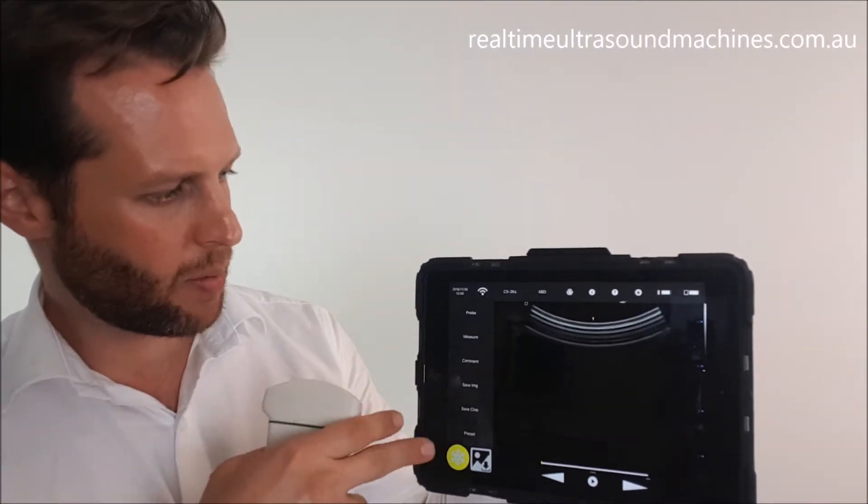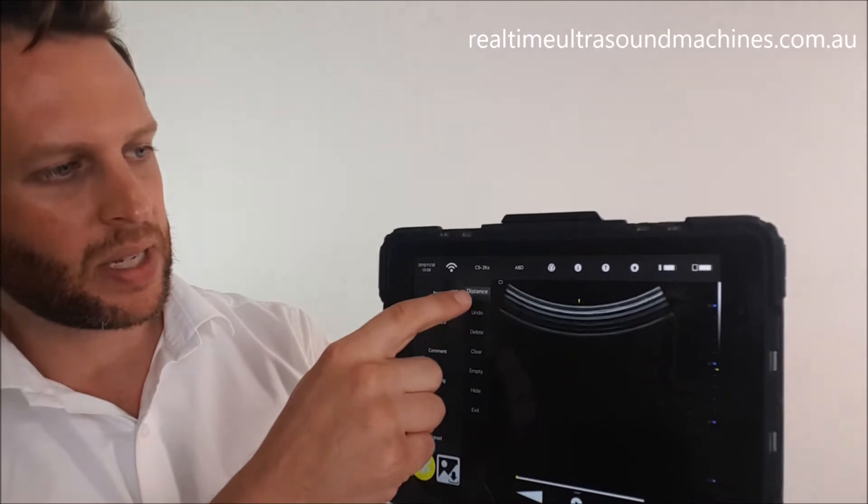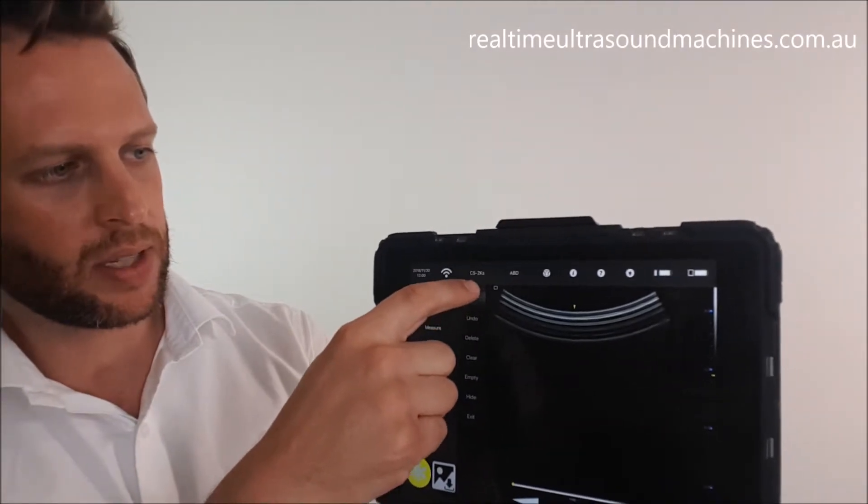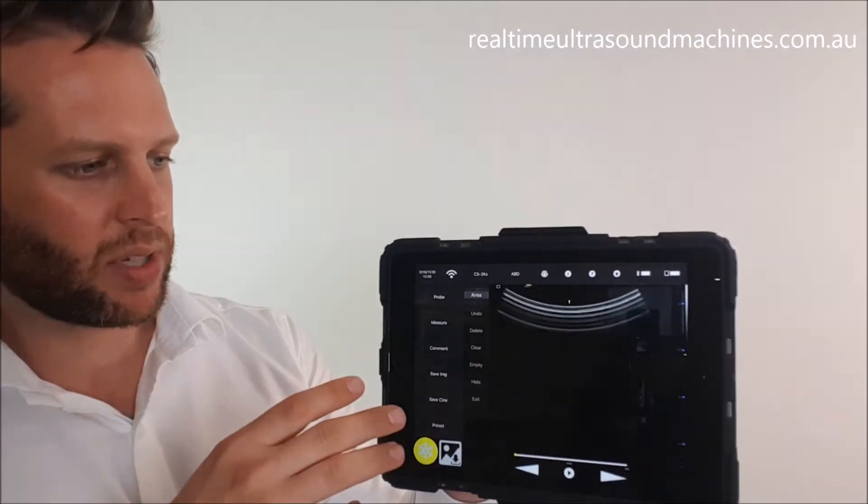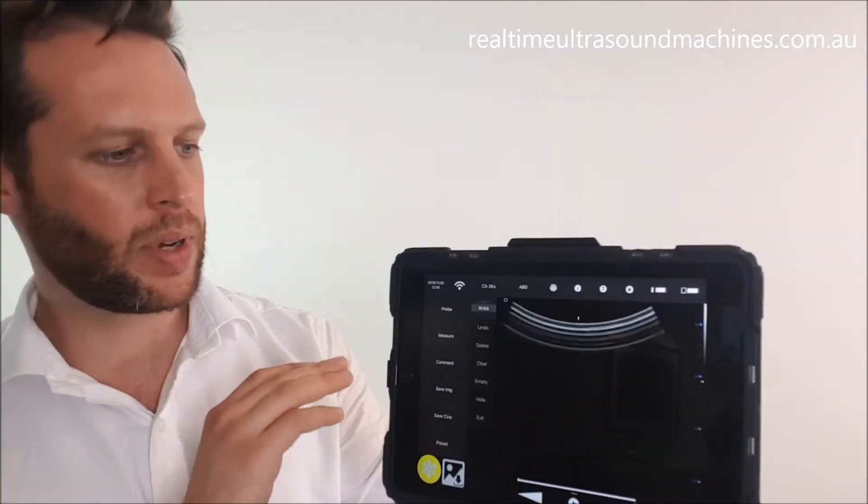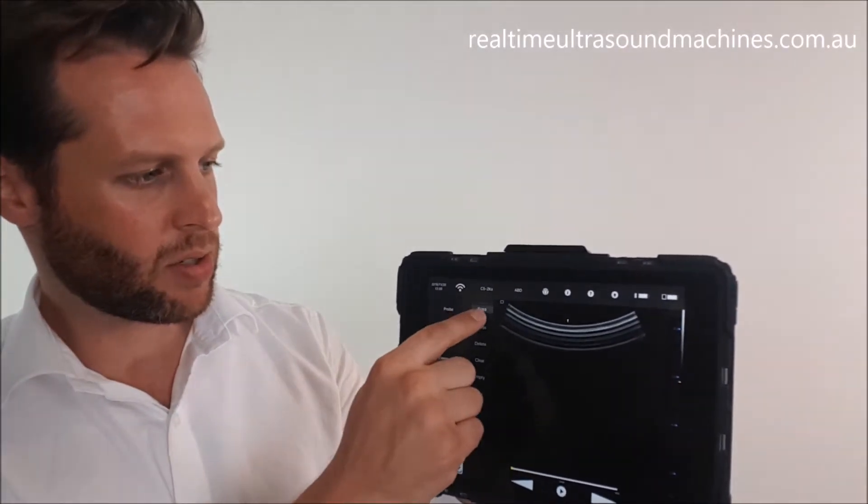Now if I want to do a measurement, I'm just going to hit measure. It'll bring up some options: distance, angle, and area. It's a little more scaled down on mobile devices like Android and iOS compared to the Windows software. In the Windows software, you have a lot more measurement options, but here we've just got those three.